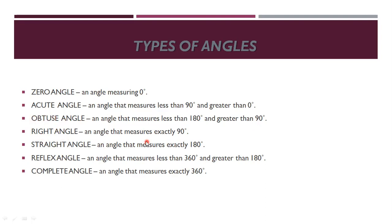Right angle: exactly 90 degrees, in an L shape. Straight angle: an angle that measures exactly 180 degrees. Reflex angle: an angle that measures less than 360 degrees and greater than 180 degrees, so between 180 and 360 degrees. Complete angle: an angle that measures exactly 360 degrees.